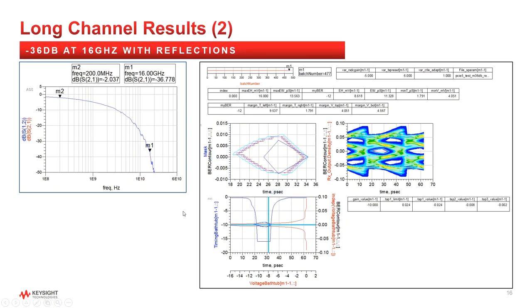You can observe roughly the same minus 36 dB insertion loss at 16 GHz, but the high frequency roll-off is steeper and there's some non-monotonicity in the loss curve, which represents increased return loss.